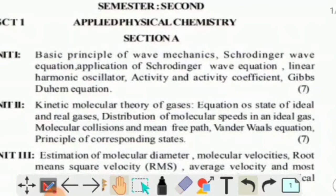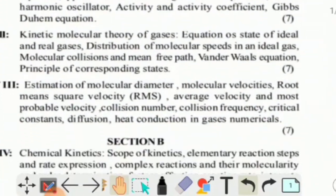Unit 2 is Kinetic Molecular Theory of Gases: equation of state of ideal and real gases, distribution of molecular speeds in an ideal gas, molecular collision and mean free path, Van der Waals equation, and principle of corresponding states.